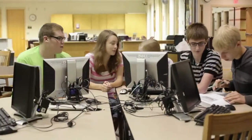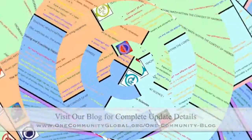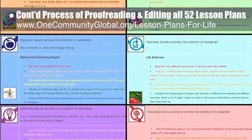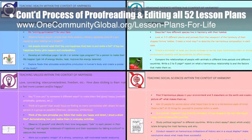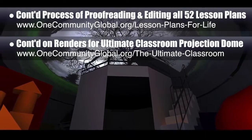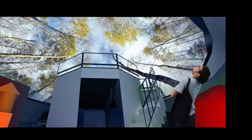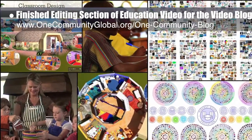OneCommunity's approach to highest good education is designed for all age groups, adaptable to any schooling environment, inspiring and fun for all participants, and includes national standards, all subjects, lesson plans, teaching strategies, learning strategies and tools, classroom design, and more. This week, the core team continued final proofreading and editing of all 52 lesson plans, completing the Happiness Lesson Plan and the Harmony Lesson Plan — bringing us to 28 of 52 finished, approximately 54% completion. We also continued work on renders for the Ultimate Classroom Projection Dome, exploring fisheye images with the projection tool, adjusting lighting, and finishing an edited introduction video, and began research on the licensing and accreditation tutorial.